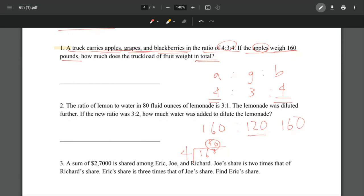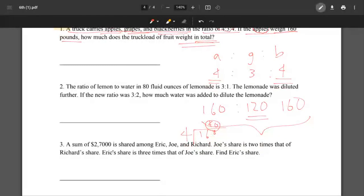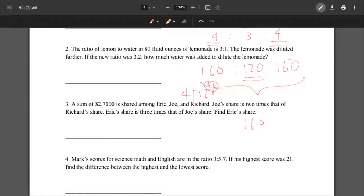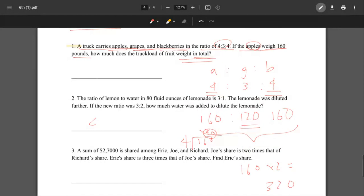They weren't asking for the weight of the grapes - they were asking for the total weight. Now we're going to add these three numbers. 160 times 2 equals 320, and then we add 120. Our final answer is 440 pounds.